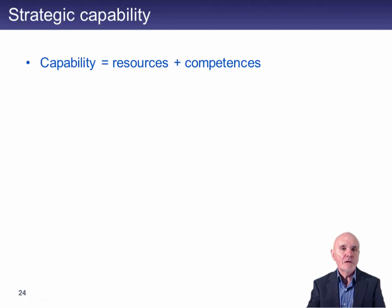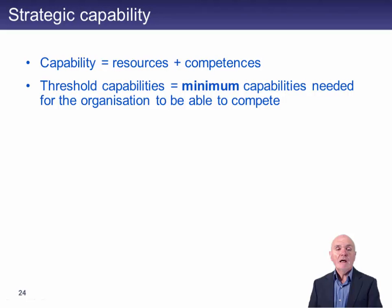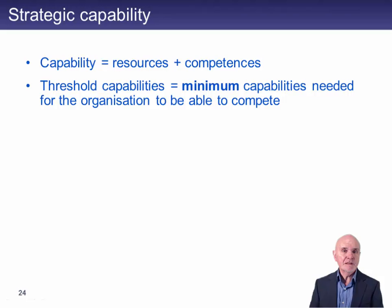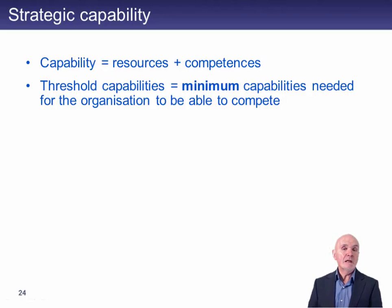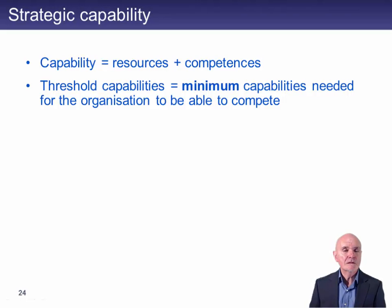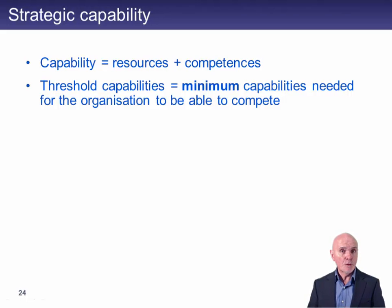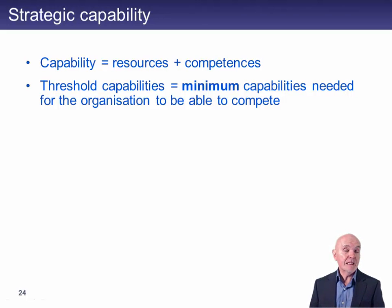The first level of resources and competences gives you what's called threshold capabilities. Threshold capabilities are enough just to allow the organisation to cling on — just able to compete, just able to survive year by year. It's very much a hand-to-mouth existence. There's no great profits, no great security, and it just takes a little pressure from a competitor or a setback in cash flows for the organisation to fail.